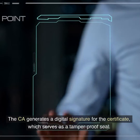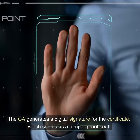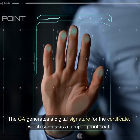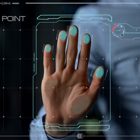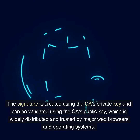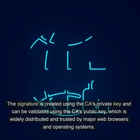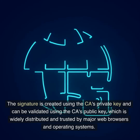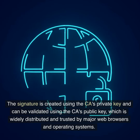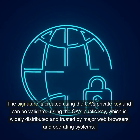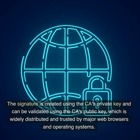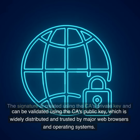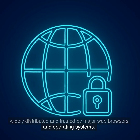The CA generates a digital signature for the certificate, which serves as a tamper-proof seal. The signature is created using the CA's private key and can be validated using the CA's public key, which is widely distributed and trusted by major web browsers and operating systems.